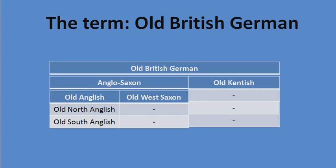Some may be wondering why I did not include early and late West Saxon. The thing is, I've been doing some reading on the nature of Old West Saxon, and to suggest that early West Saxon and late West Saxon are different dialects or varieties — which tends to be the case with a lot of historical linguists — it's hard to make that argument. I think I will make a video specifically on this topic in the future.